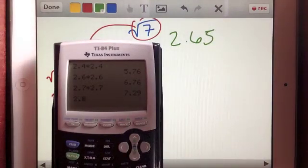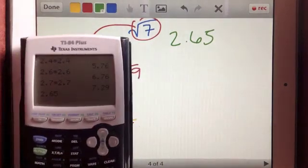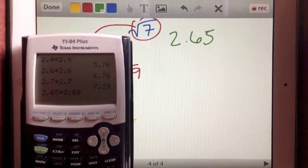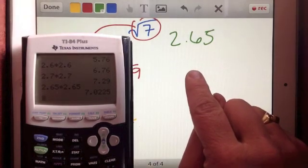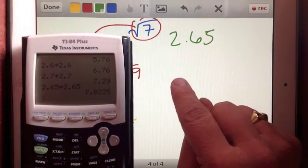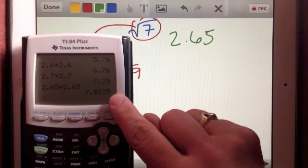Let's see if I have 2.65 times 2.65. That gets me 7.0225. That's pretty darn close, but it is a value that is more than 7.